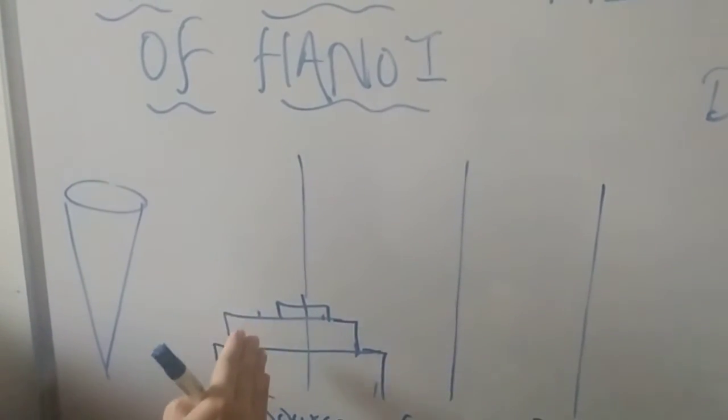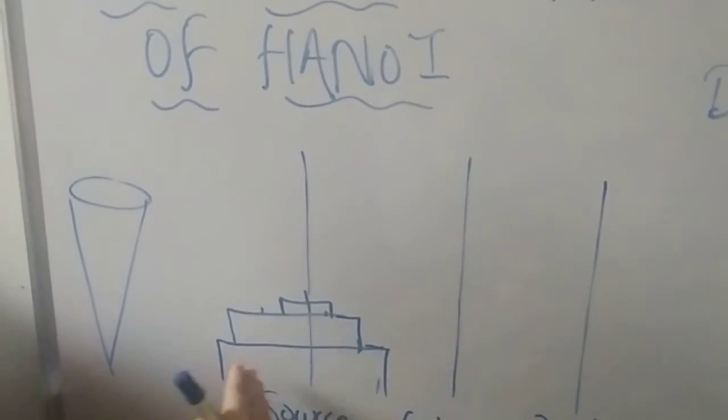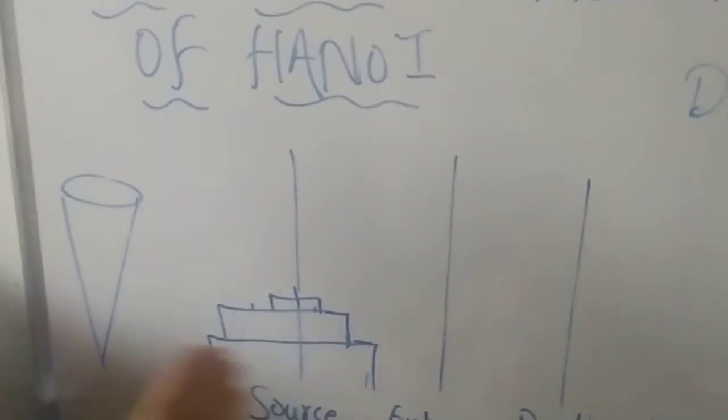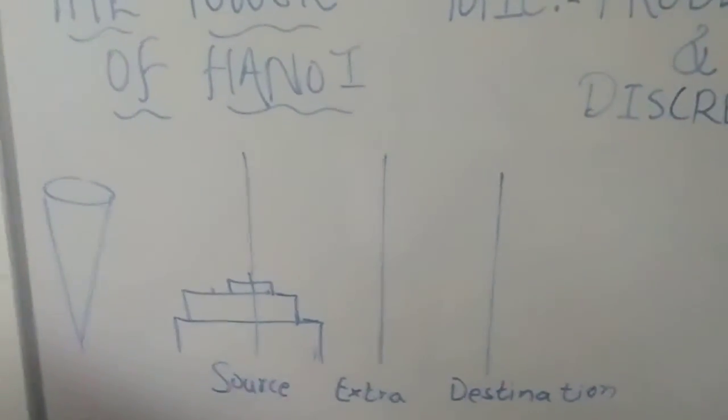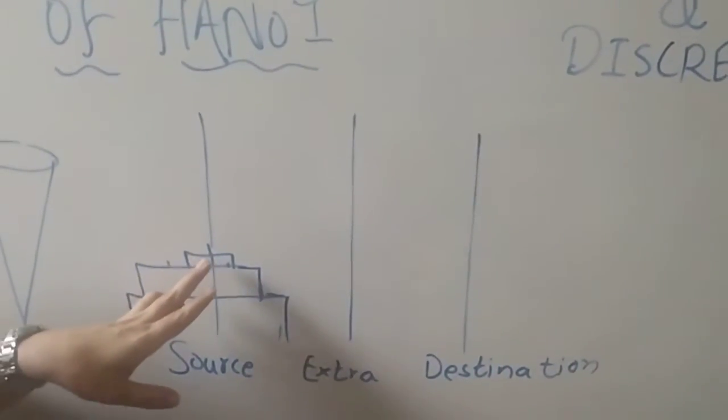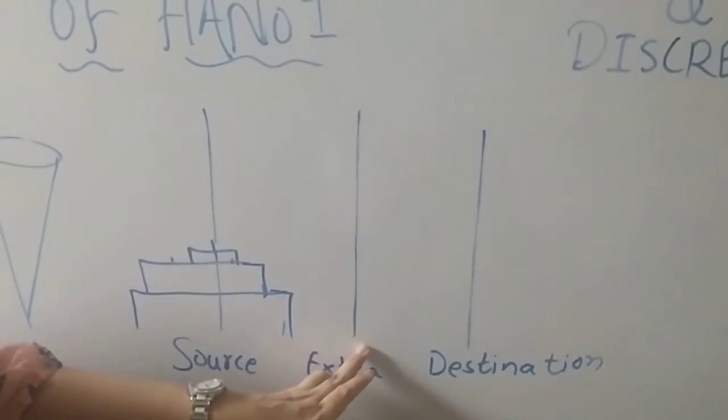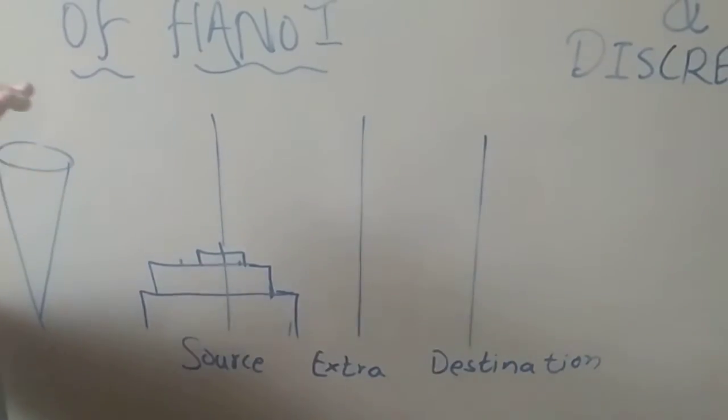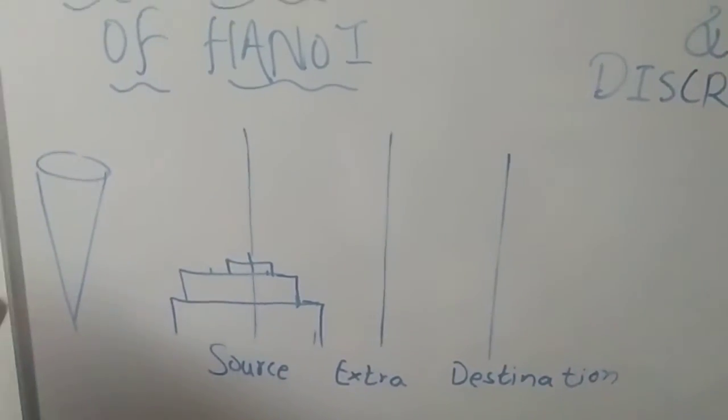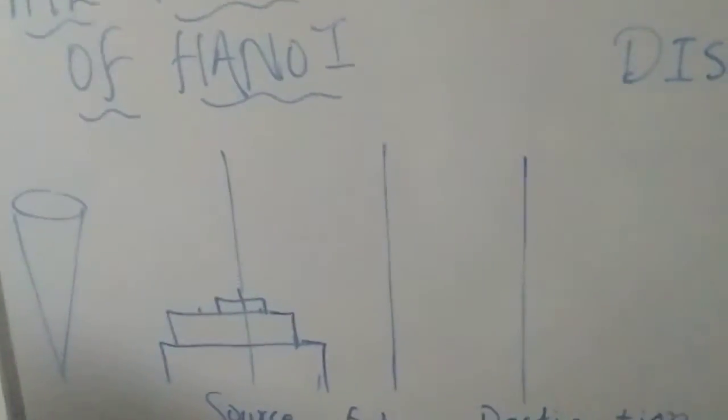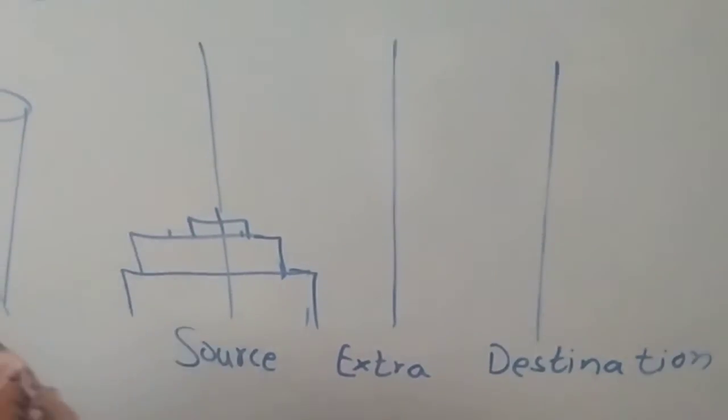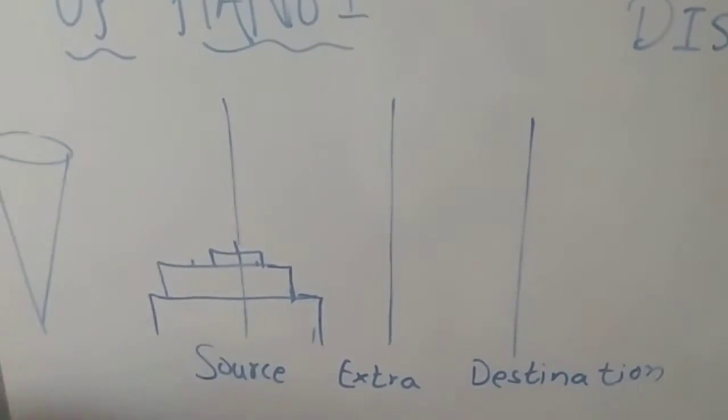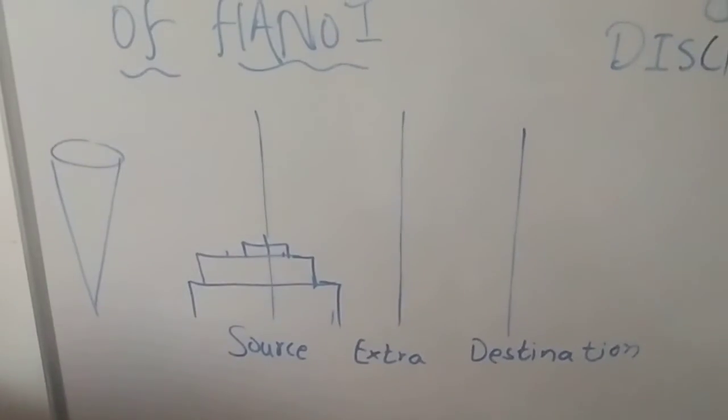But keep in mind, when you are putting the smaller disc to the extra or when you are moving the smaller disc to the destination, what is the rule? Three different rules are there for this. Only one disc can move at a time.